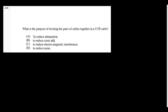What is the purpose of twisting the pair of cables together in an unshielded UTP cable? Twisting is done to reduce cross-talk. If there is shielding, that is for electromagnetic interference reduction.